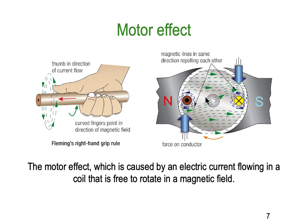This is called the motor effect. Here you can see just a wire with current coming towards you — the force on the conductor will follow the arrow, forcing the conductors in opposite directions, until they come into a position where they are attracted and pulled in. By the time they reach the new position the current has been reversed, so they get pushed back out — pulled in, pushed out — as the motor rotates continuously.